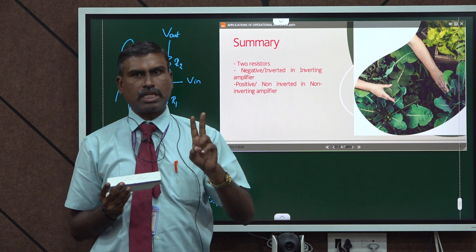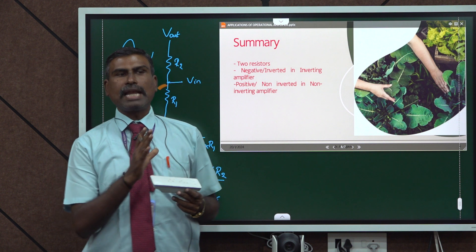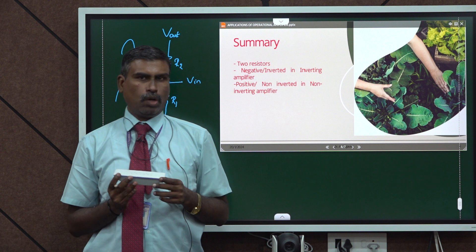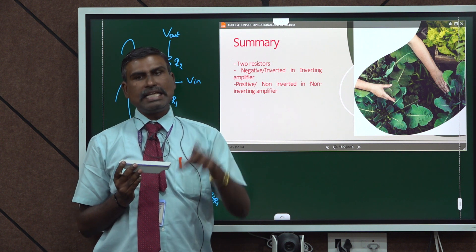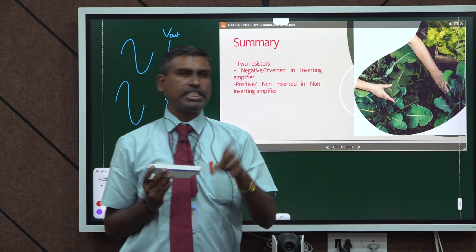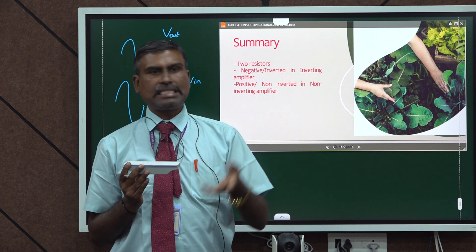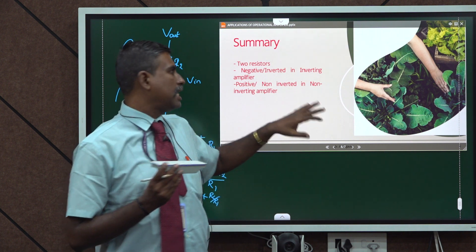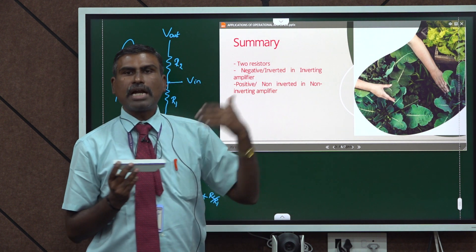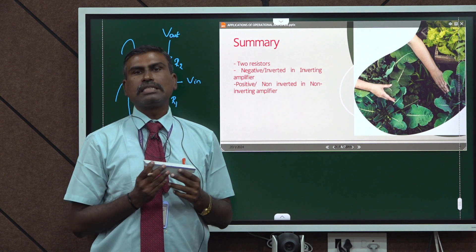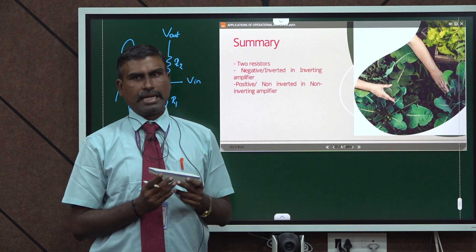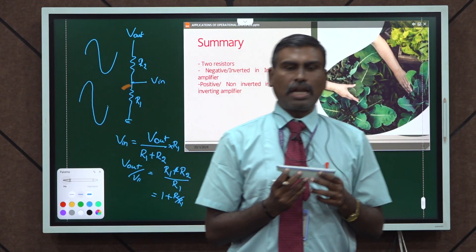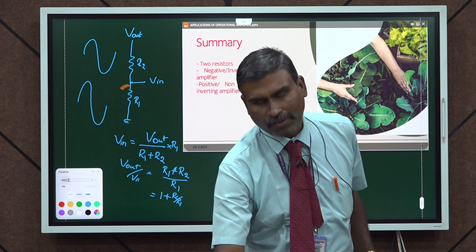In summary, for designing both inverting and non-inverting amplifiers, we require only 2 resistors. By proper selection of resistor values we can adjust the gain. For the inverting amplifier: for DC voltage the polarity changes, and for AC voltage the signal is inverted. For the non-inverting amplifier, the signal is amplified for both AC and DC without inversion. We have discussed inverting and non-inverting amplifiers in this video. We will continue in the upcoming videos. Thank you.